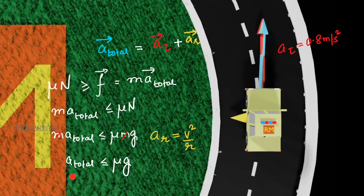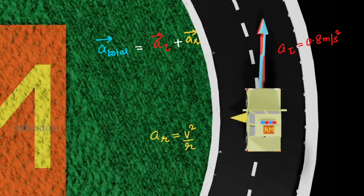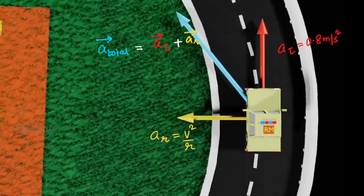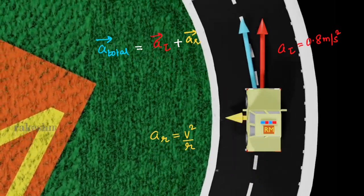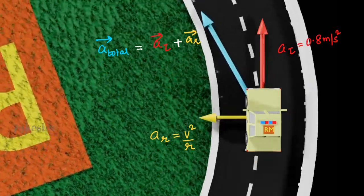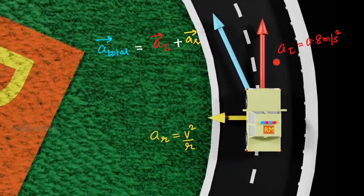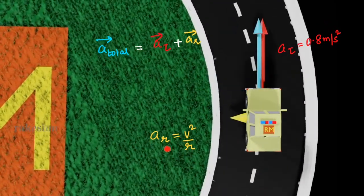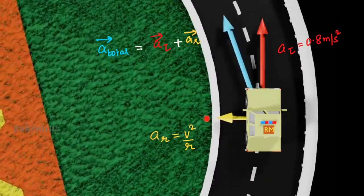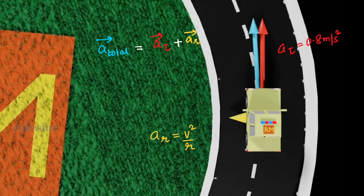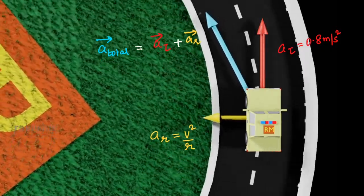So the maximum acceleration this car can have is μg, and above that the car will slip or skid. Observing the schematic: the speed of the car is continuously increasing due to tangential acceleration, so the radial acceleration is also continuously increasing. The total acceleration is the vector sum of tangential and radial. When the total acceleration reaches μg, the car will slip.